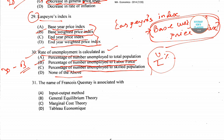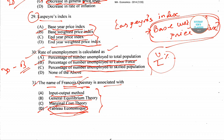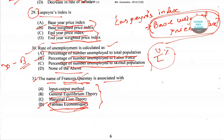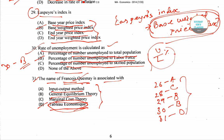Question number 31: the name of François Quesnay is associated with the Tableau Économique, so option D is the right answer. To summarize so far: Q26 = option A, Q28 = option C, Q29 = option B, Q30 = option B, Q31 = option D.